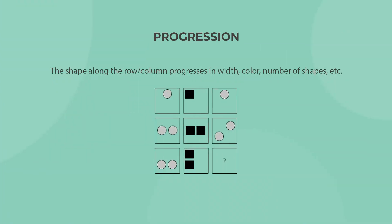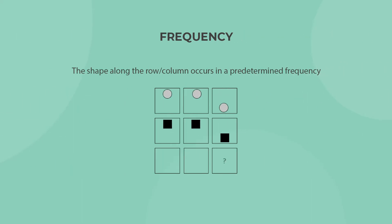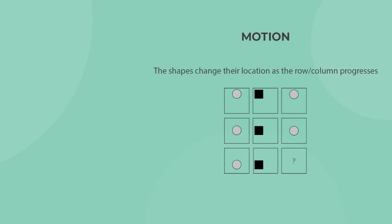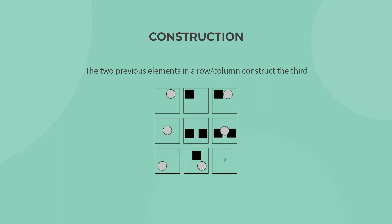As I've mentioned, the shapes in each matrix follow a specific rule. Although the number of rules is virtually infinite, these are the top 5 ones used in the test: Progression, Rotation, Frequency, Motion, and Construction. To further explore these 5 rules including a sample question for each with a full detailed solution, check out our Matrigma info page.